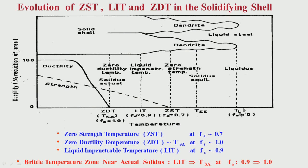When solidification is taking place, these are the dendrites which are forming in the mushy zone. You have both dendrites as well as liquid steel, and this is the total solid shell. This temperature corresponds to the liquidus temperature T_L, where the solid fraction is 0. The actual solidus temperature T_SA corresponds to where the solid fraction is 1, meaning 100 percent solid. Beyond that is liquid steel, and beyond this we have solid shell.